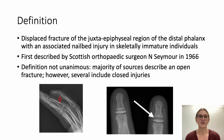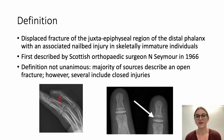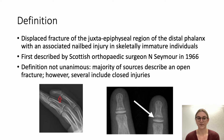So we'll start with the definition. A Seymour fracture is a displaced fracture of the juxta-epiphyseal region of the distal phalanx with an associated nail bed injury, and it occurs in skeletally immature individuals. The fracture type was first described by Scottish orthopaedic surgeon N. Seymour in 1966.